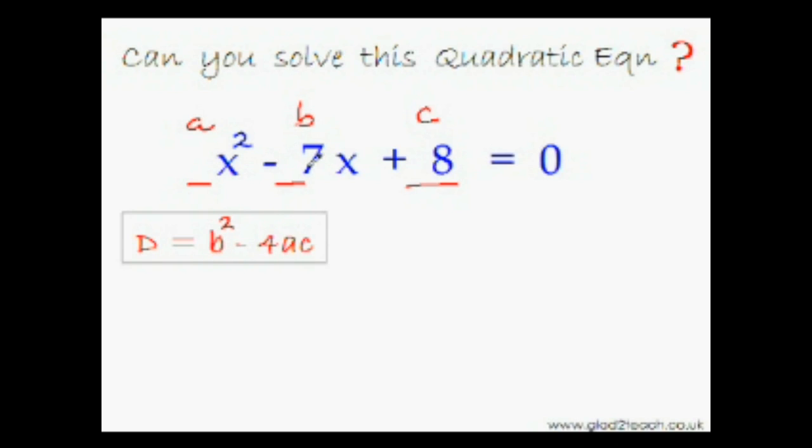So b squared is negative 7 squared, that is positive 49. And minus 4ac would be minus 4 times 1 is minus 4, times 8 is minus 32. 49 minus 32 is 17. So that means that this equation is a very tricky equation. Why? Because 17 is not a perfect square.